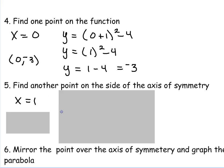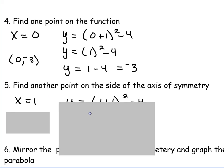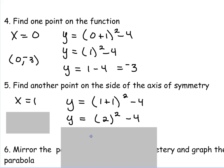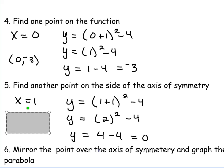I'm going to do the same again. This time I'm going to plug in 1. So I have the 1. So 1 plus 1 is 2. 2 squared. 2 squared is 4. 4 minus 4 is 0. So my second point is 1, 0.